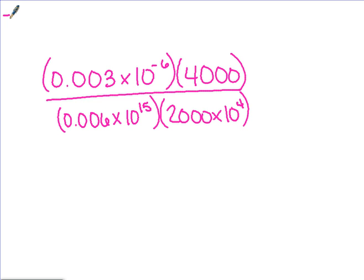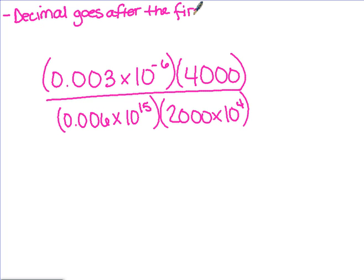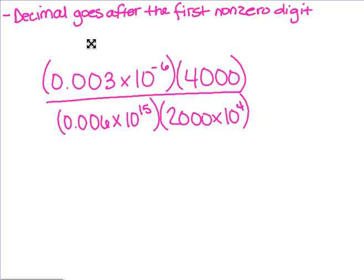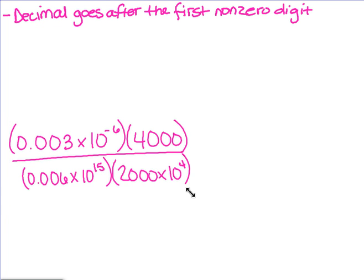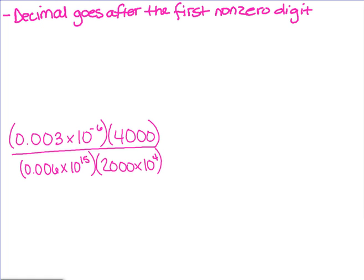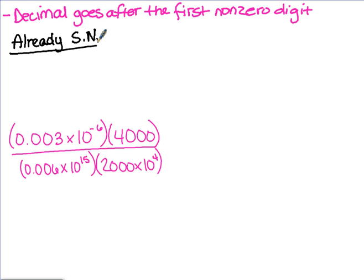Keep in mind that in scientific notation, the decimal goes after the first non-zero digit. In this particular example problem, you will notice that the decimal place is not in the correct spot, so we are going to have to move it and do some rearranging. When a number is already in scientific notation and you're putting it into proper scientific notation: if you move the decimal to the right, you're going to subtract that number from the exponent.